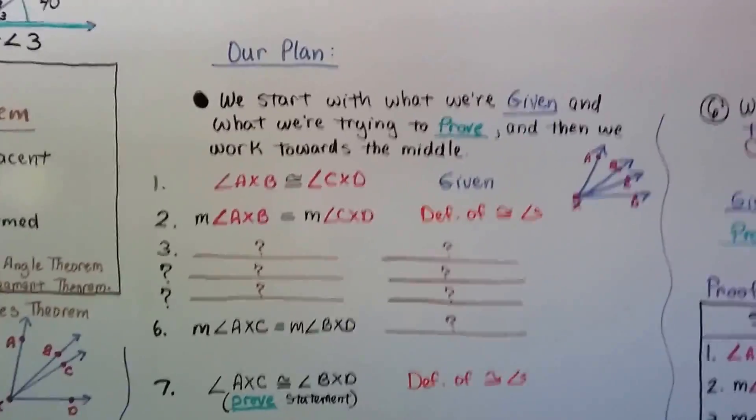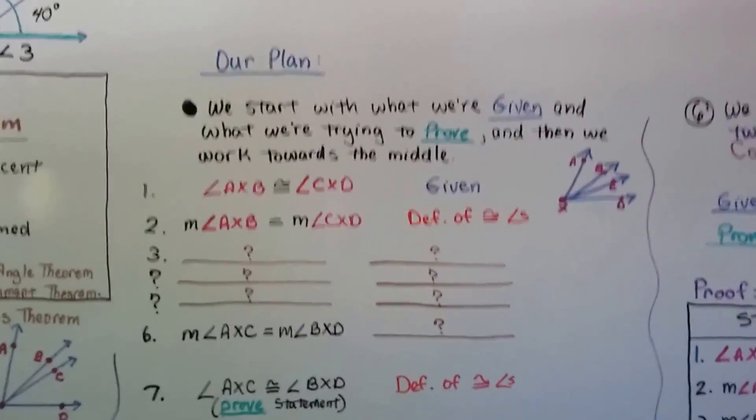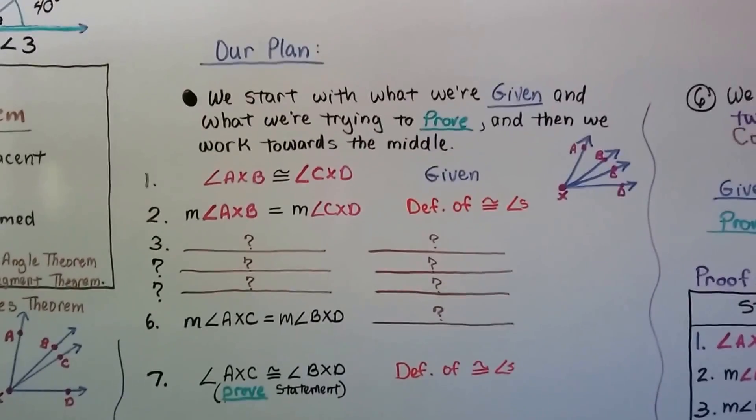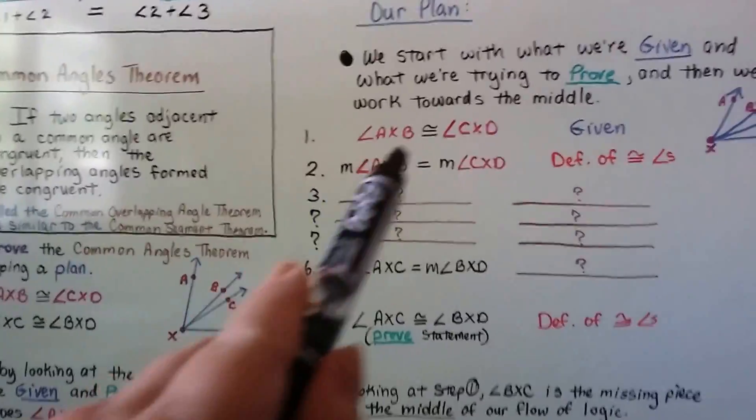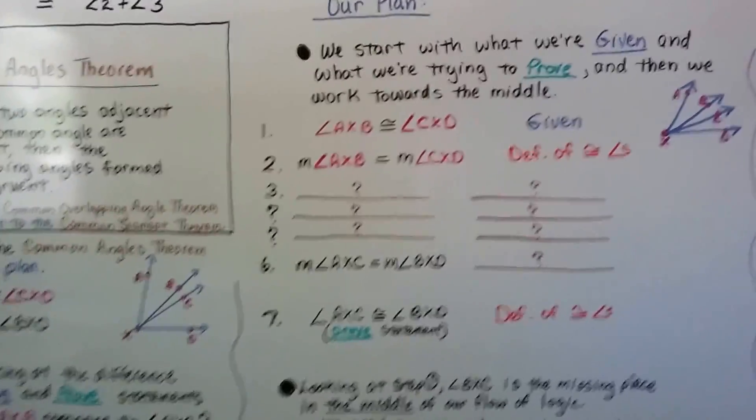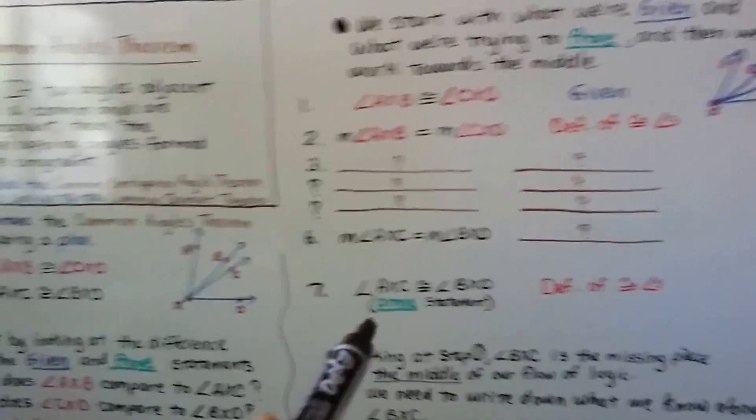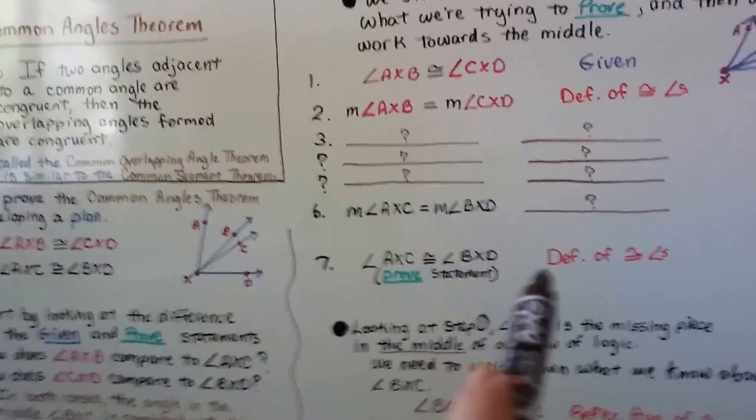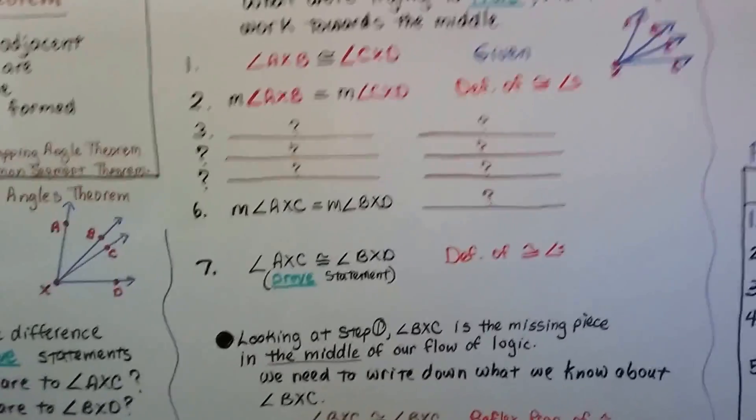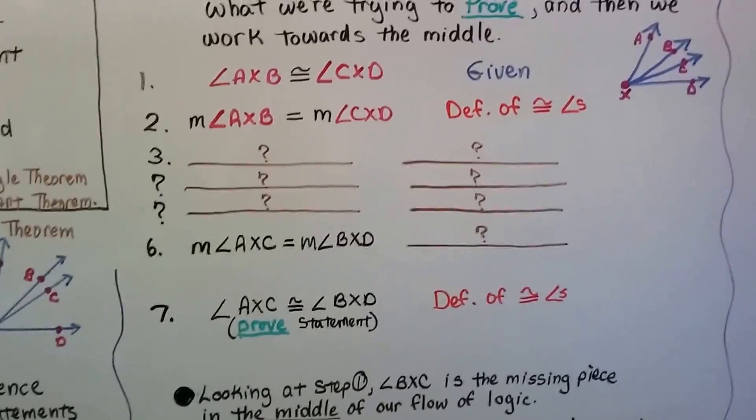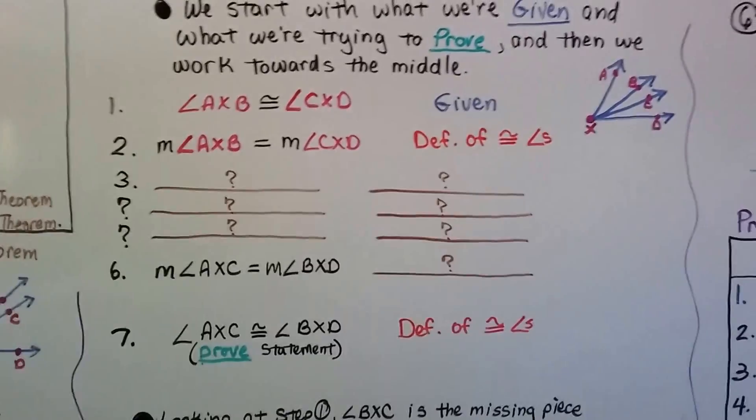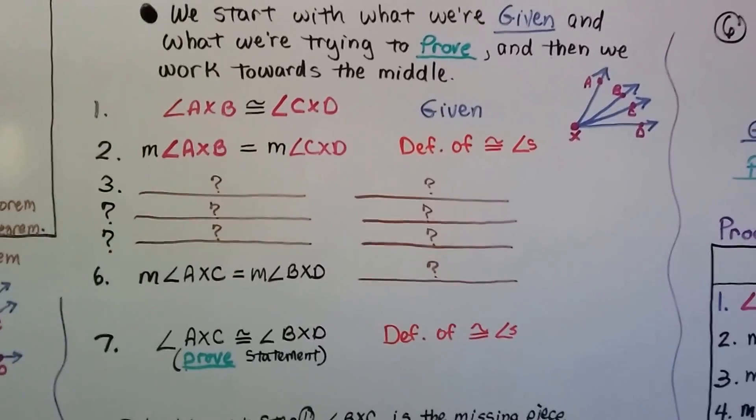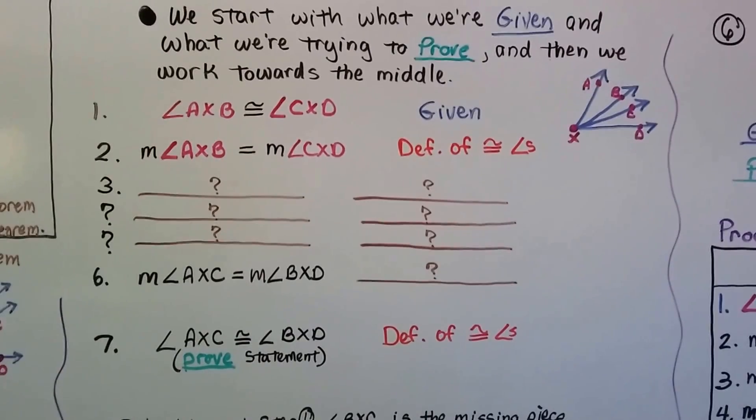So here's our plan, and it's got some pieces missing. We start with what we're given and what we're trying to prove, and then we work towards the middle. So we have a given, we've got it here. And we've got what we're trying to prove. Here's our prove statement at the bottom. And we can say, well, if these are congruent, they're equal, because that's the definition of congruent angles. And that's our reason, the definition of congruent angles.